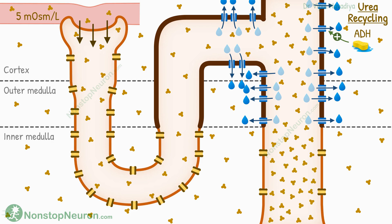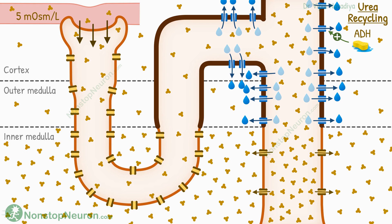By the time the filtrate reaches the inner medullary collecting duct, the concentration gets higher than that in the interstitium. So the urea diffuses down the concentration gradient from the tubule into the interstitium. This way, its concentration in the interstitium also increases. Some urea is excreted in urine too.